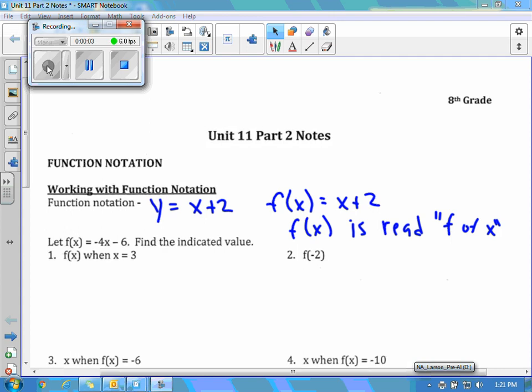In unit 11, part 2, we're going to talk about function notation. Function notation has a lot to do with slope intercept form. That's really a different way to write slope intercept form. So for your definition, I don't really have a definition for you, I just have an example. So if you took the equation, the linear equation y equals x plus 2, which right there is in slope intercept form...